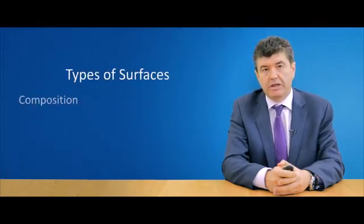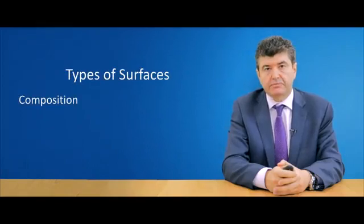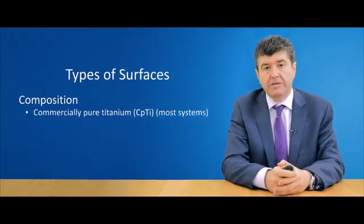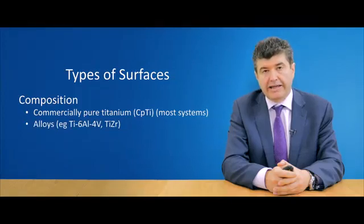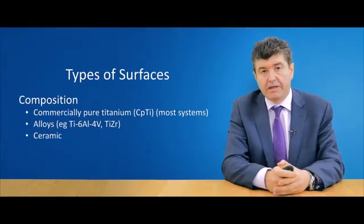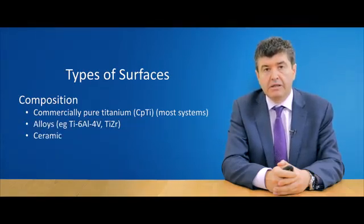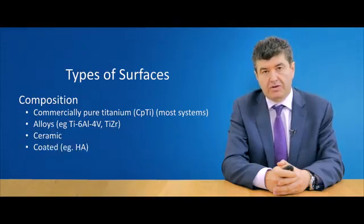One is according to the composition. Implants can be made from commercially pure titanium, which is the most commonly utilized material. Furthermore, they can be made from alloys which include other elements. One recent development has been the incorporation of zirconia. Furthermore, they can be made from pure ceramic, including zirconia. And finally, they also may have a coating such as hydroxyapatite.